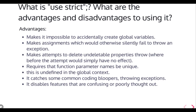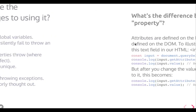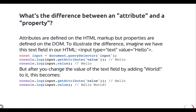Any variable will not go into the global scope from that file. Use strict also makes assignments which would otherwise silently fail throw an exception. It requires function parameter names to be unique. Also, this is undefined in the global context — when you try to access the this object inside a simple function it represents the window object, but with use strict it will be undefined, because use strict does not allow access to the global scope or window object.